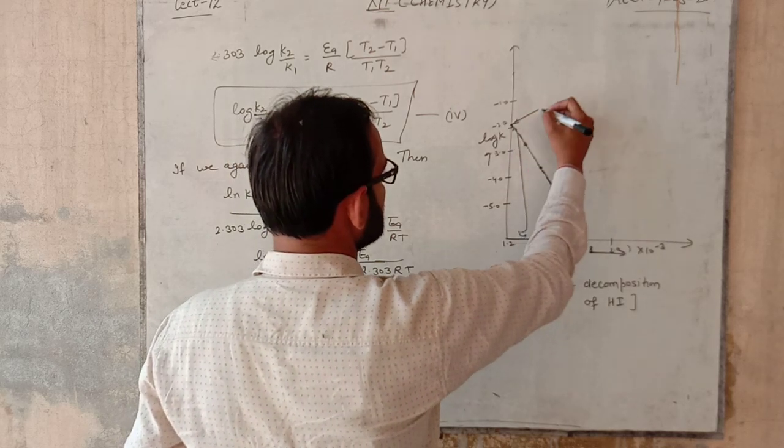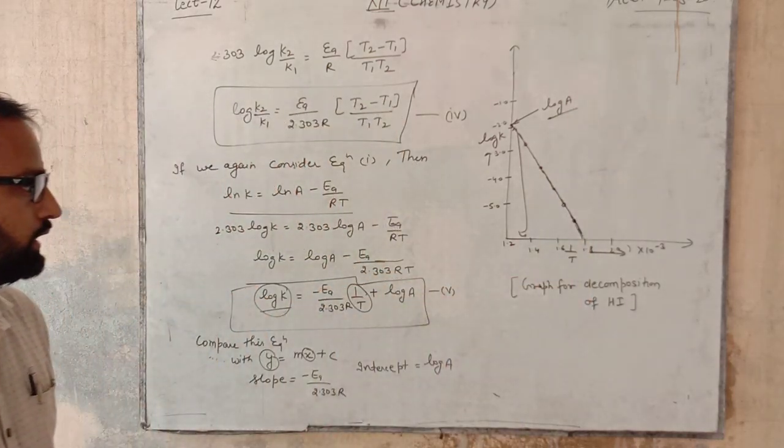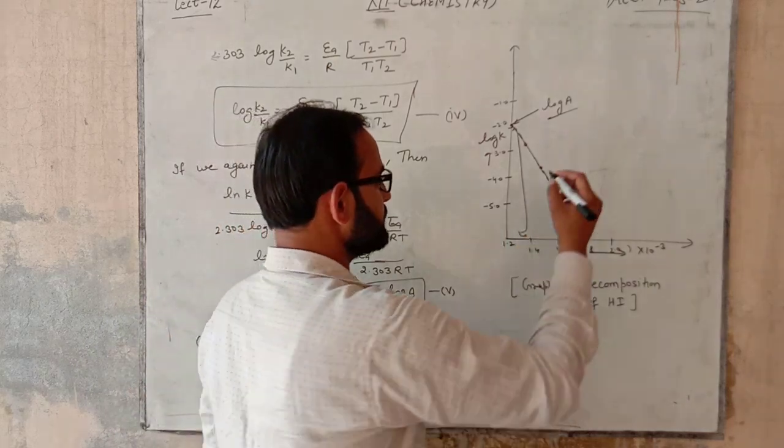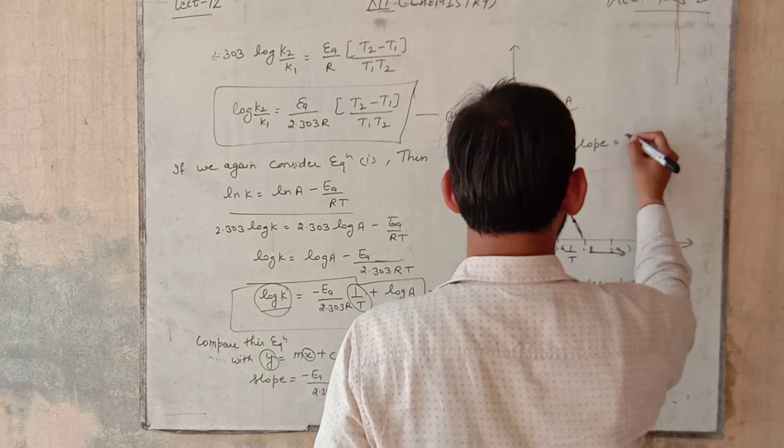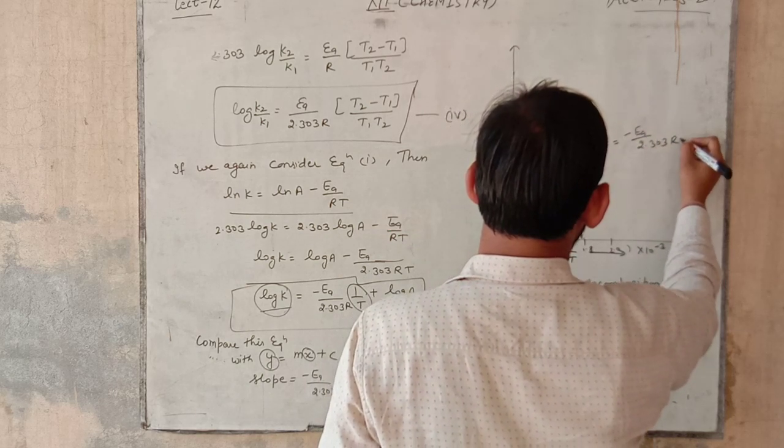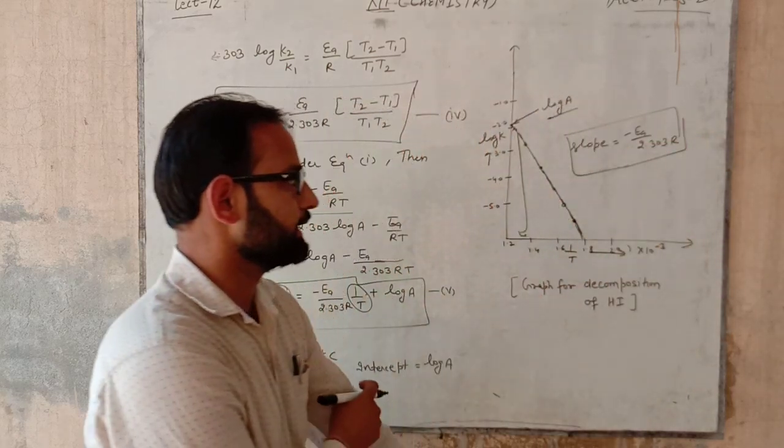Then by knowing the value of slope, where slope is equal to minus Ea upon 2.303 R, by knowing the value of slope we can get the value of activation energy.